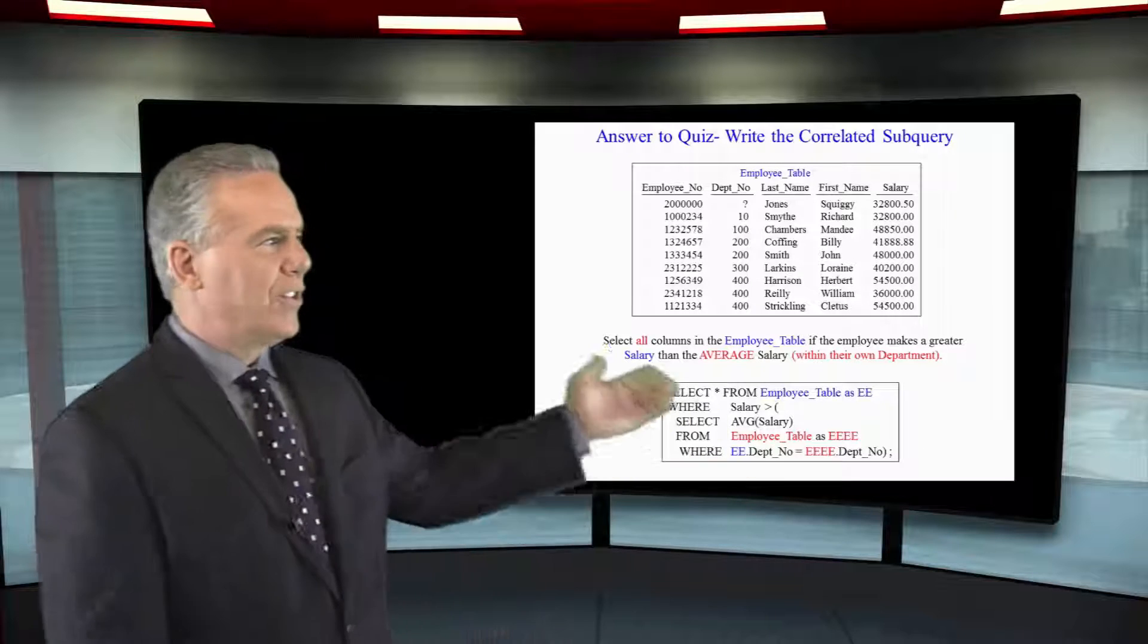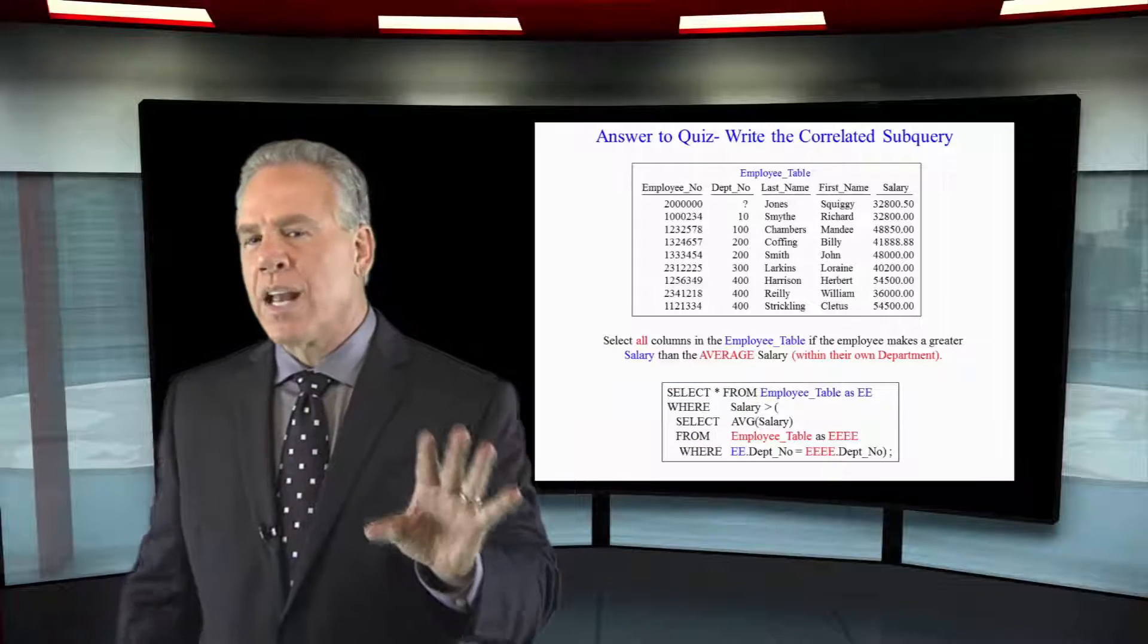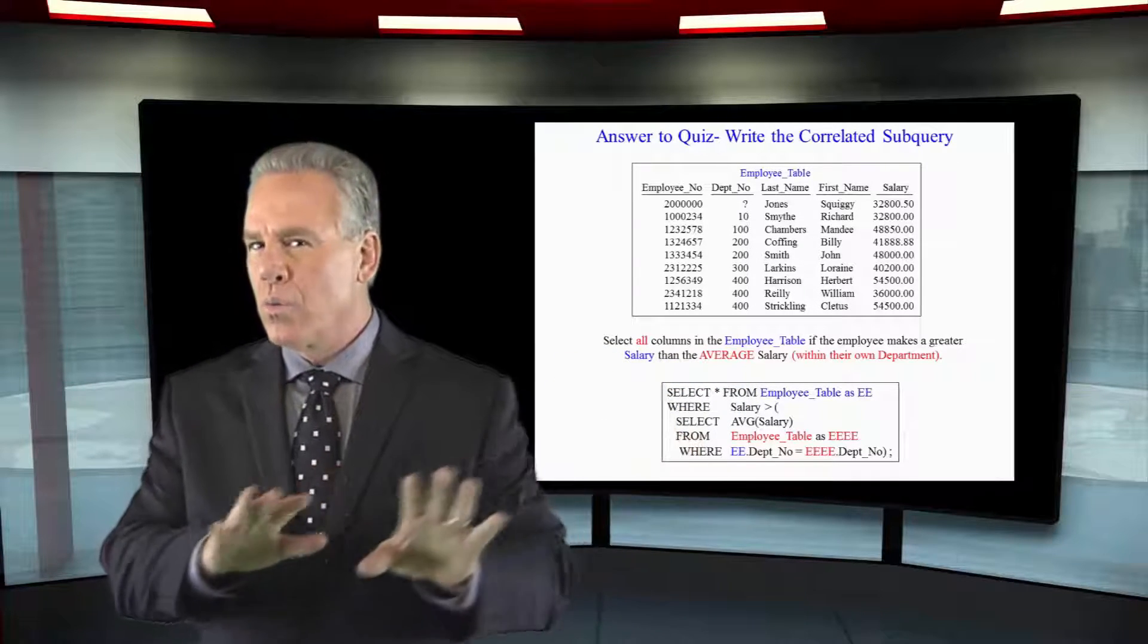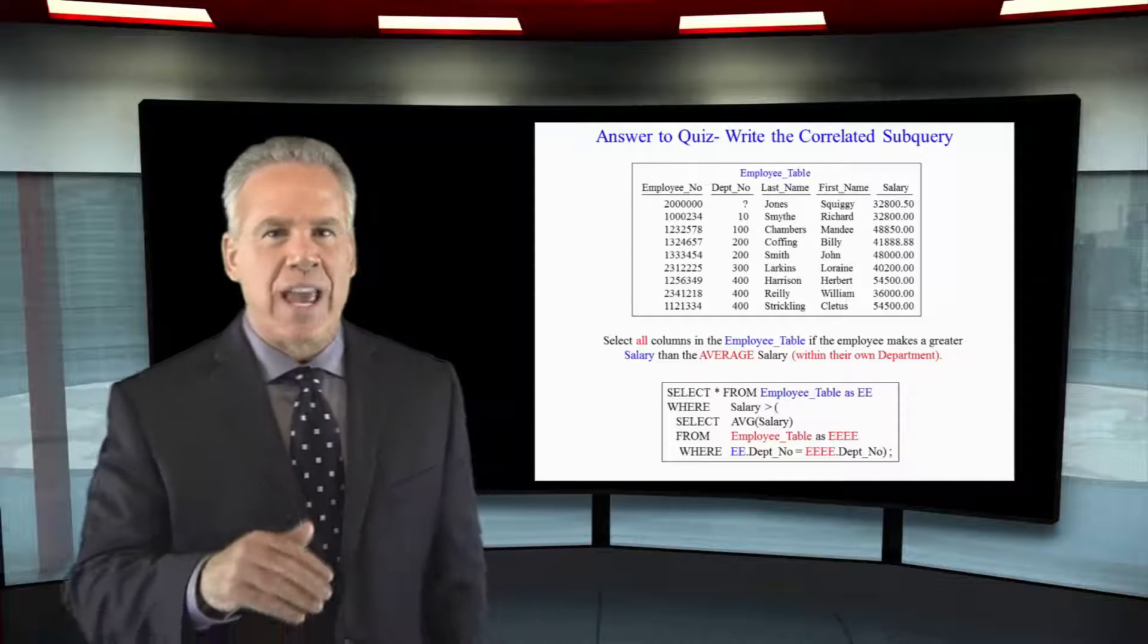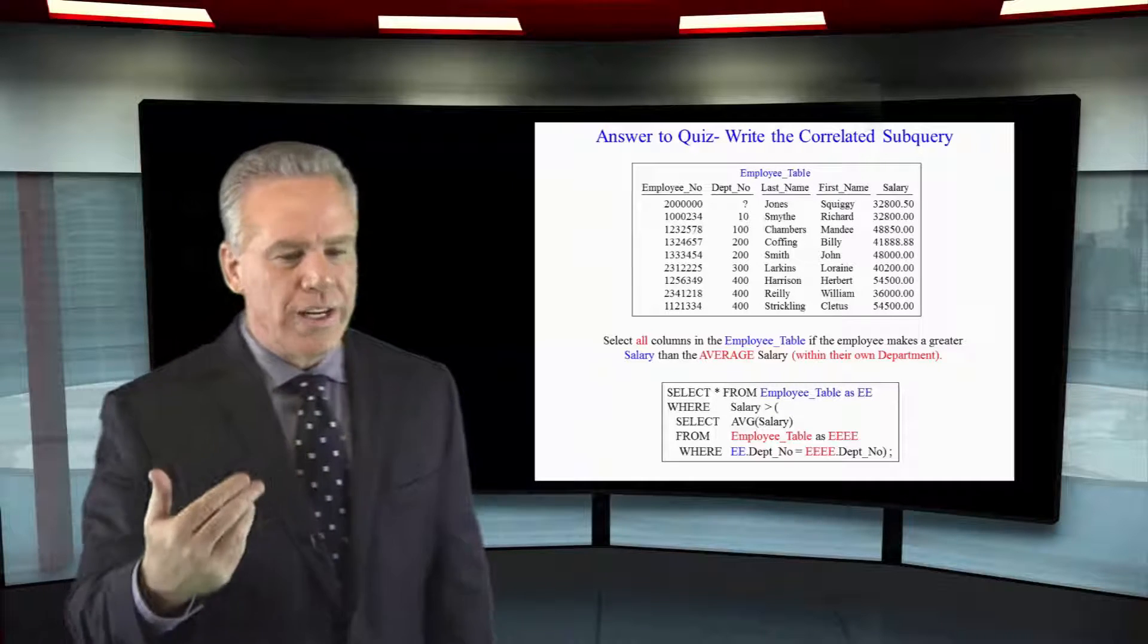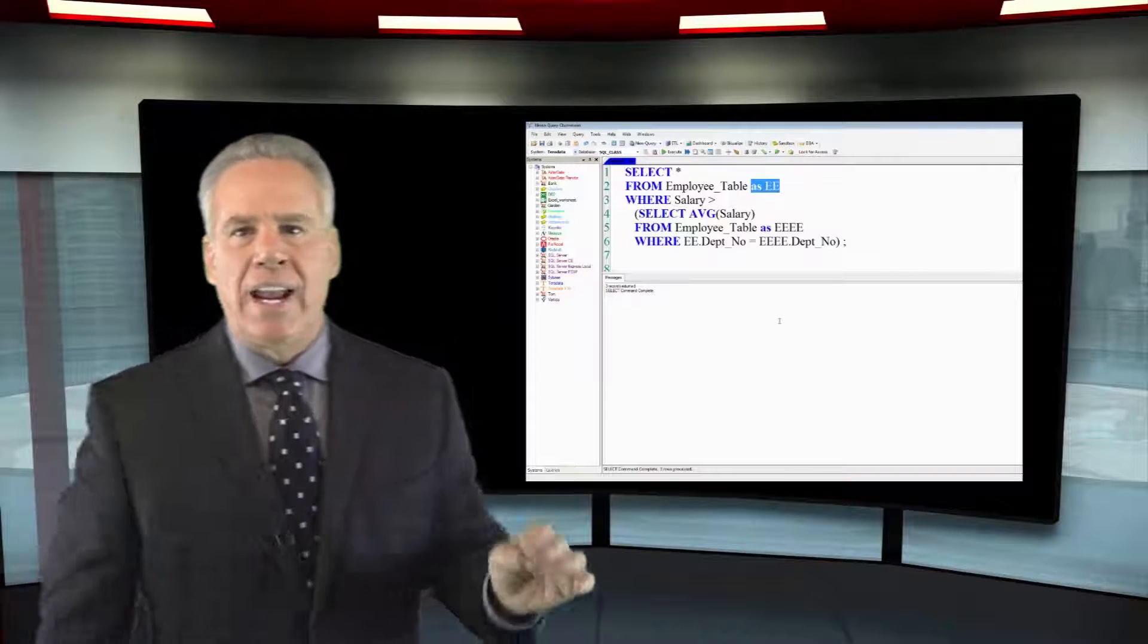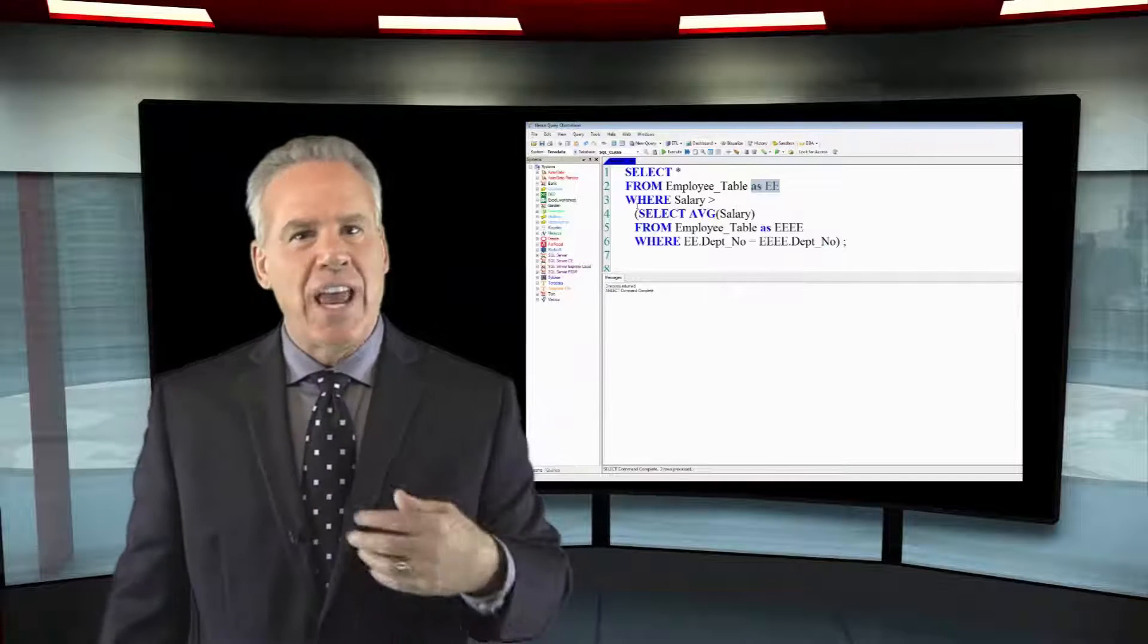Here is your answer. It's called a correlated subquery. It should be pronounced co-related, but it's actually called correlated. Now let's recognize it first. A correlated subquery is going to select everything from the employee table and I give it an alias such as EE.